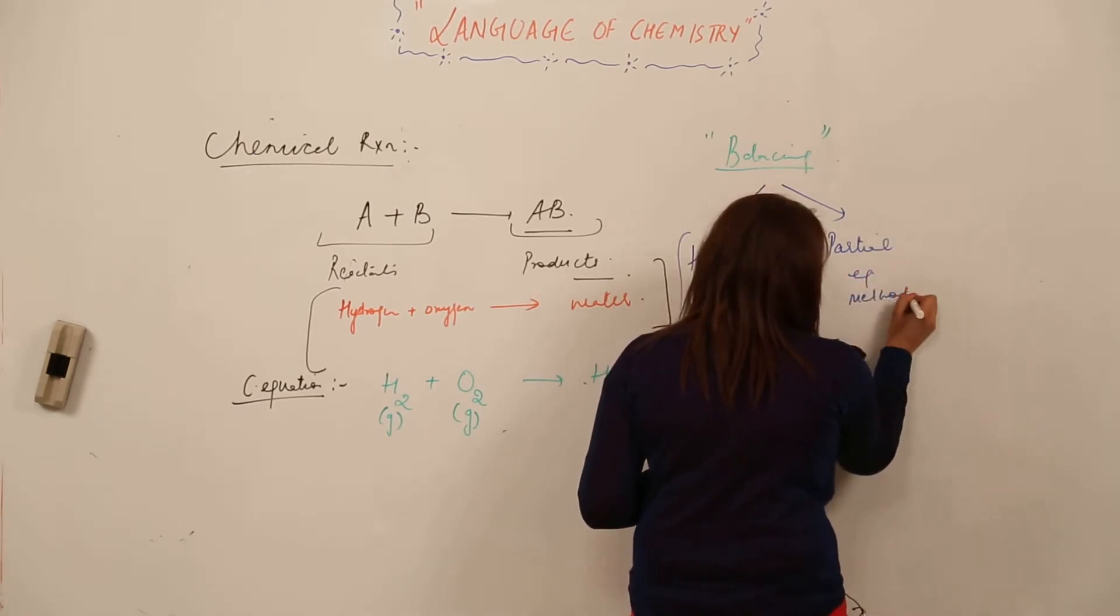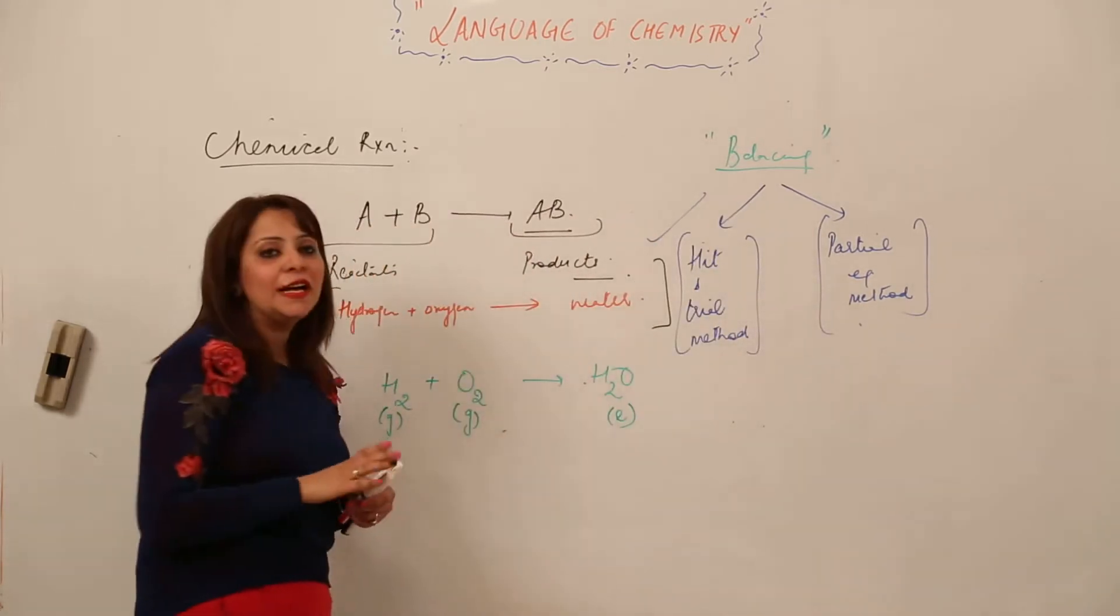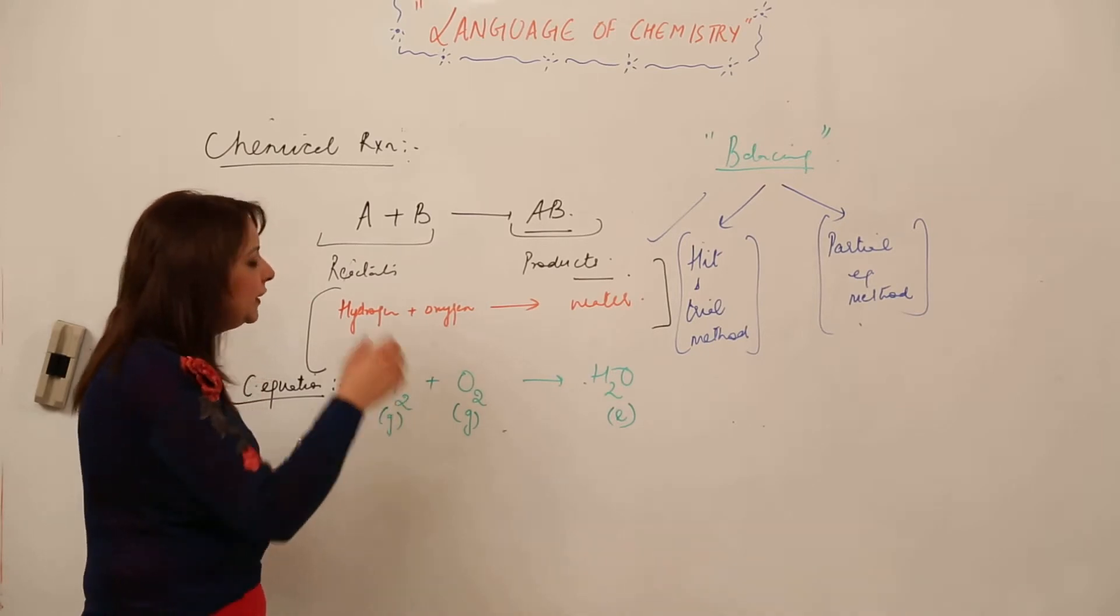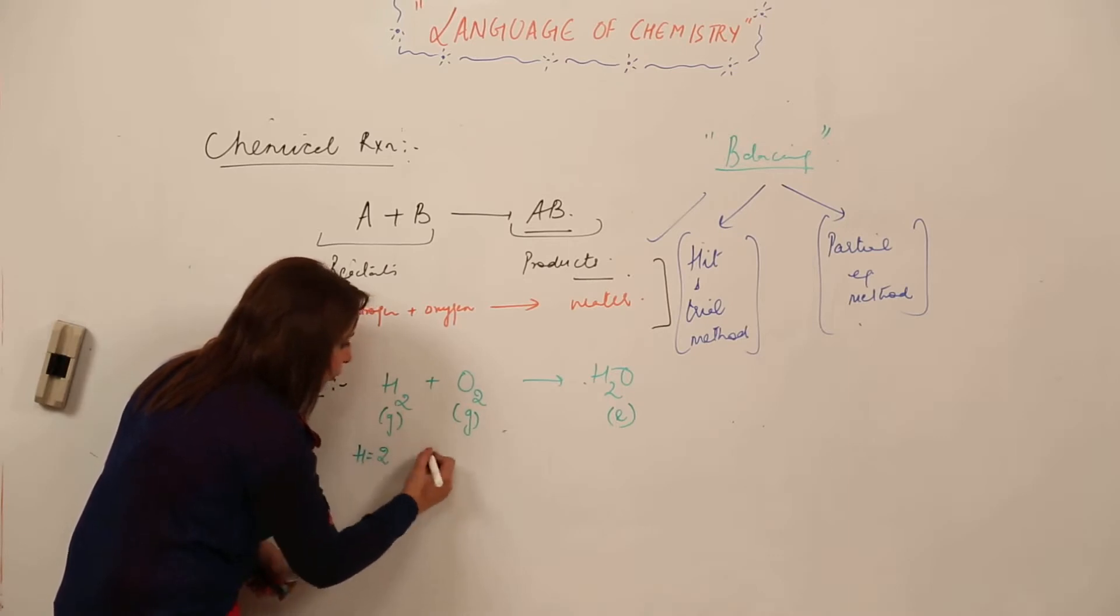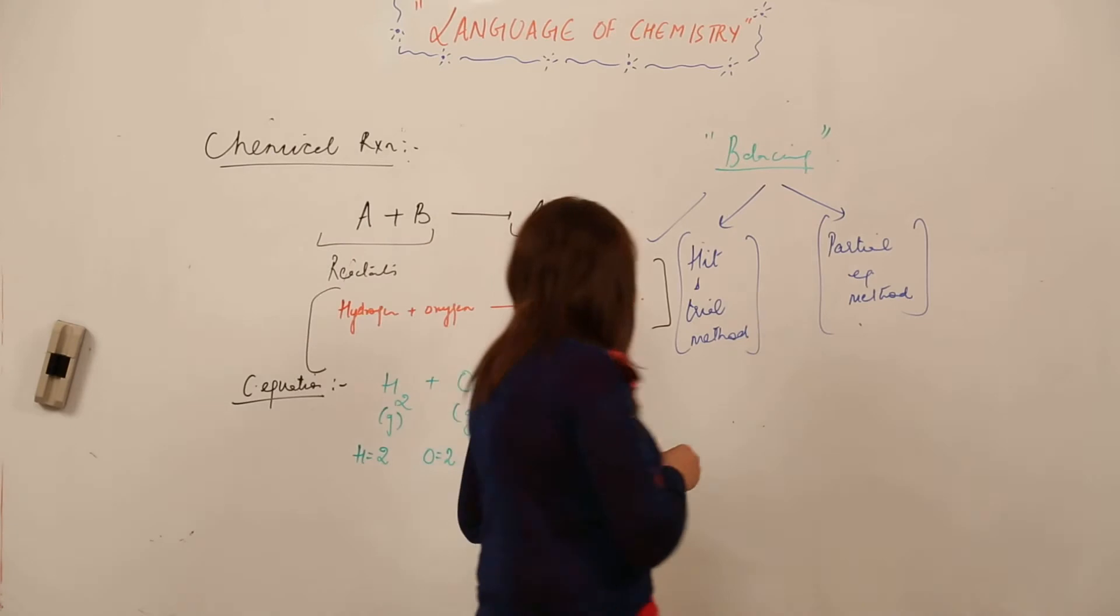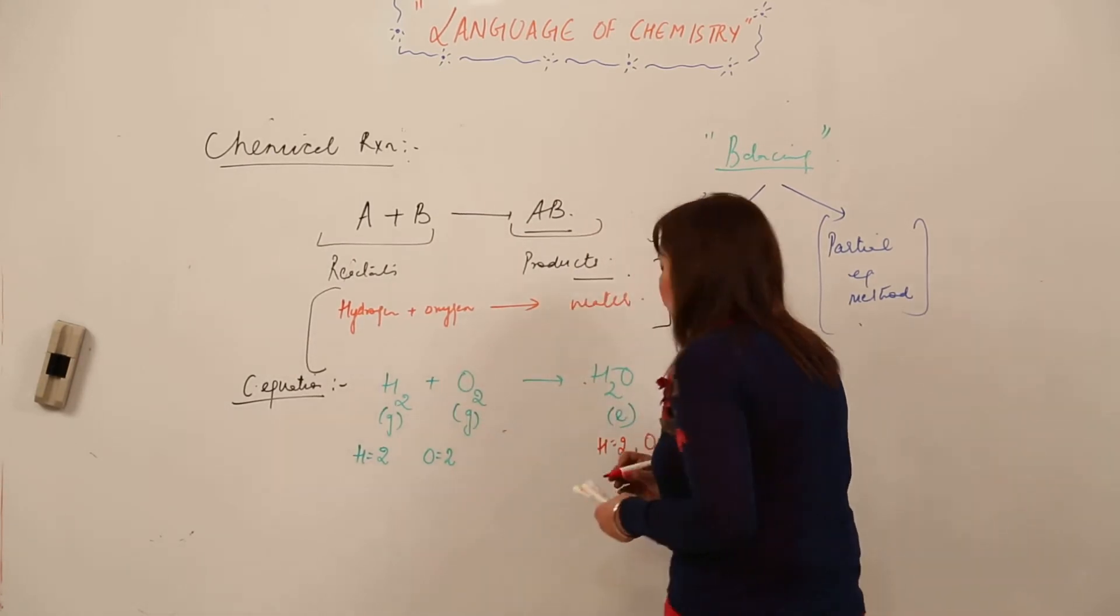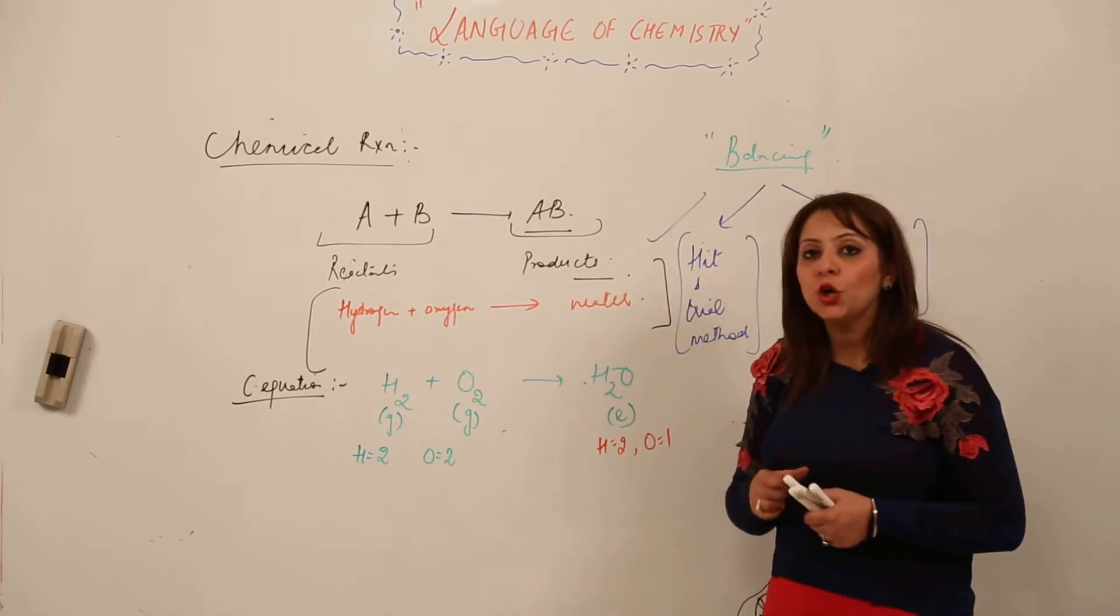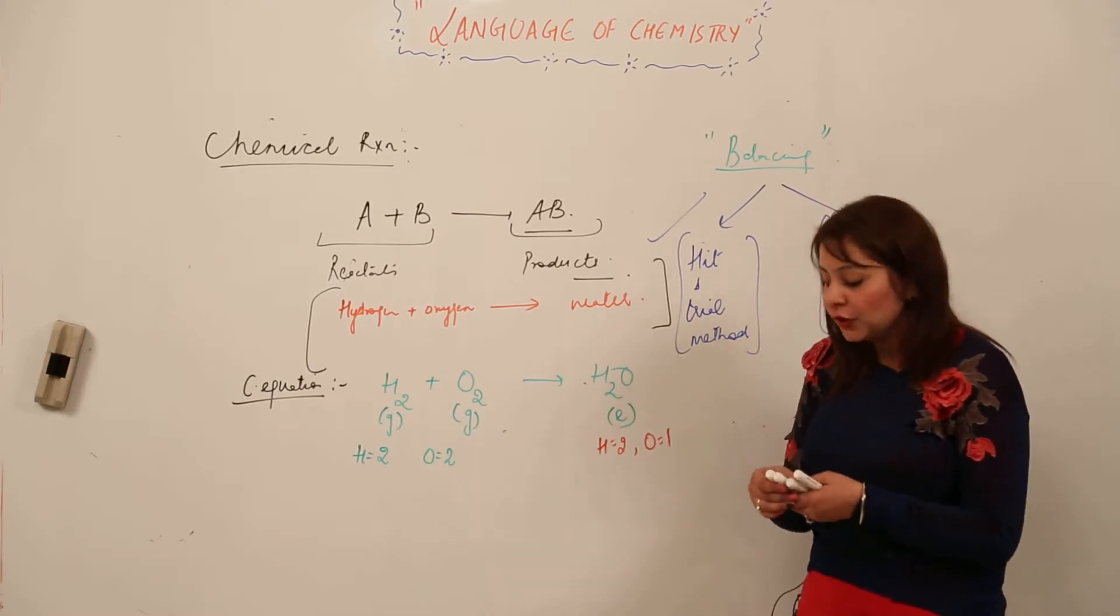We'll take up each method one by one. For hit and trial method, we write the number of atoms on the left side: hydrogen 2, oxygen 2. On the right side: hydrogen 2, oxygen 1. So hydrogen is the same but we need to balance the oxygen.